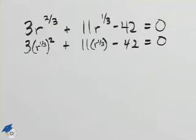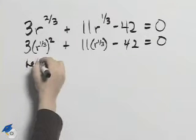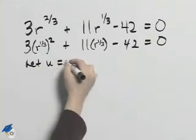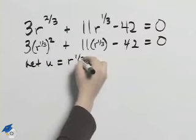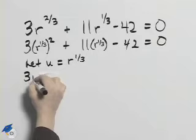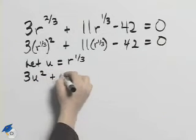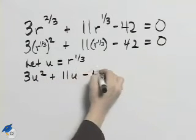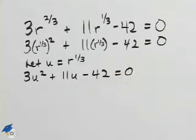I know that r to the 1/3 squared is r to the 2/3. I can do a substitution at this point. I'll let u equal r to the 1/3, so then I can write 3u squared plus 11u minus 42 equals 0.